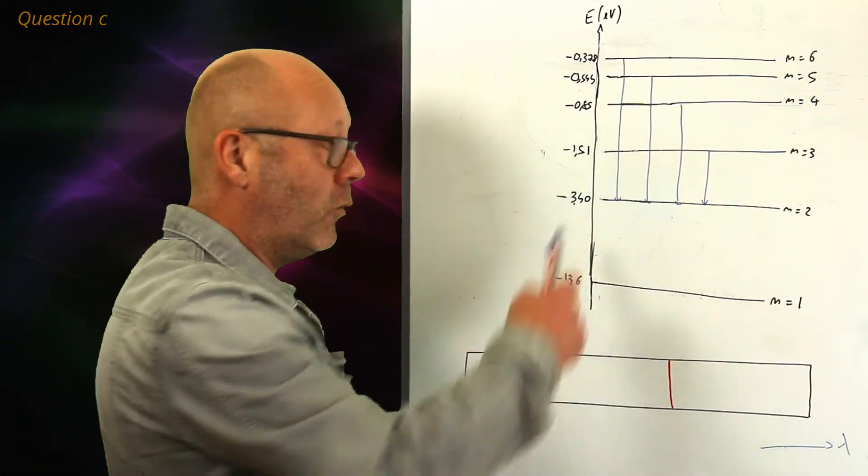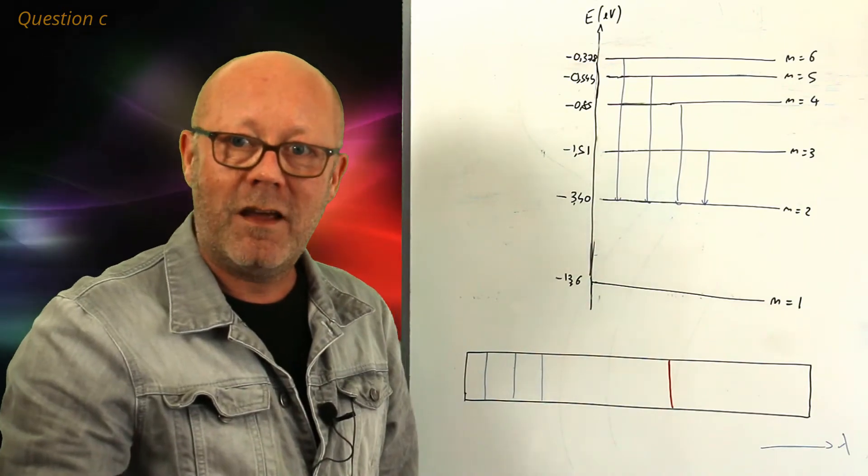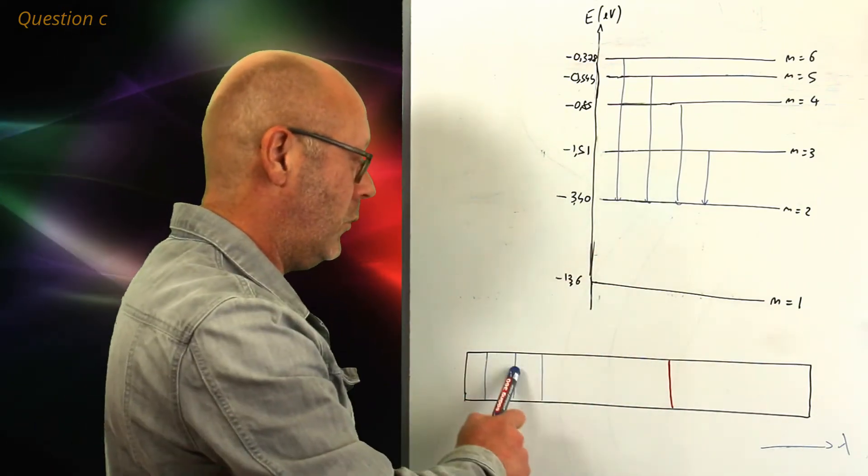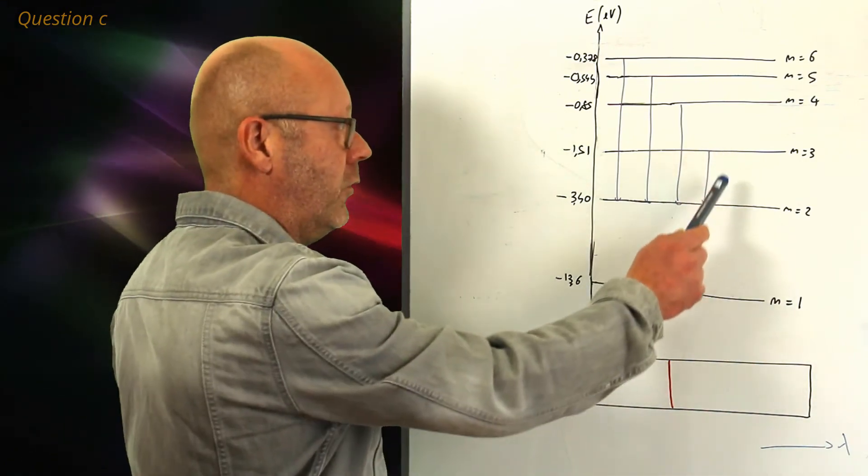Well, we have the energy levels, so we can calculate the energy of the photons which are emitted, therefore their wavelengths, and therefore attribute them to each of these lines. Let's try for this transition from 3 to 2.